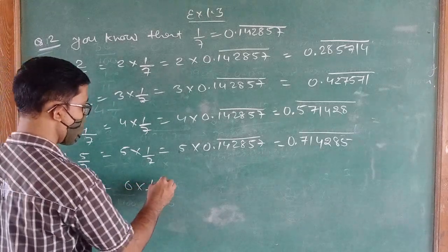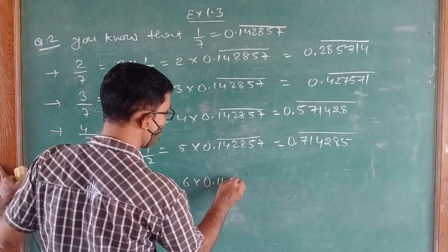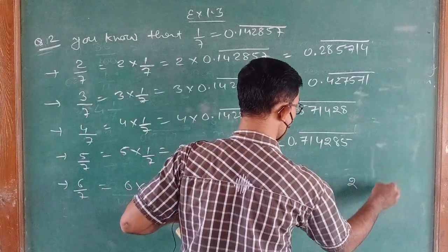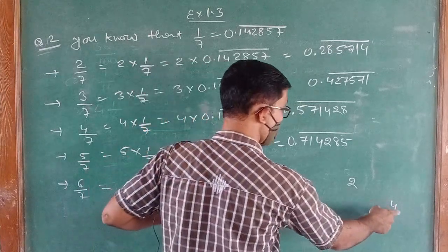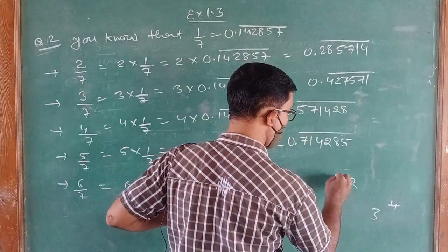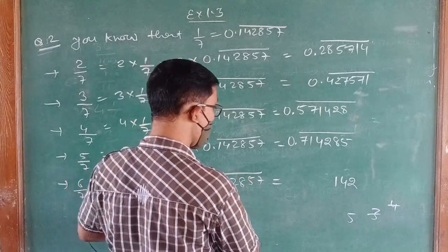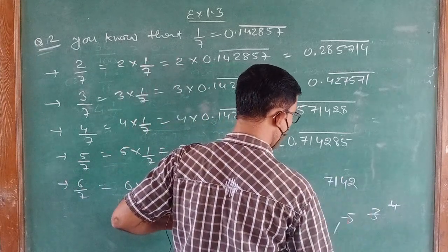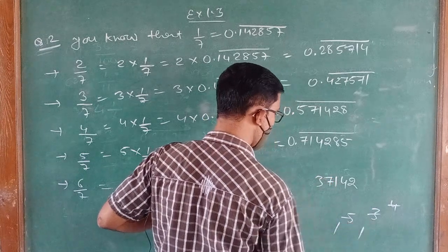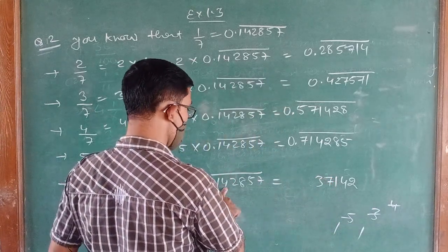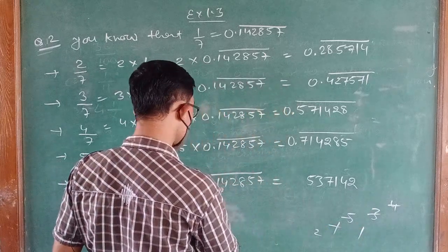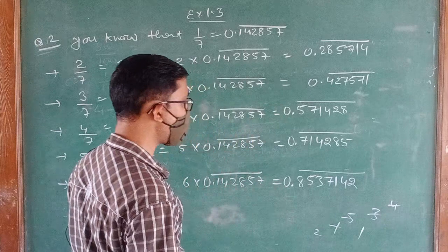For 5 upon 7: 5 × 0.142857. Five sevens are 35 carry 3, five fives are 25 and 3 = 28 carry 2, five eights are 40 and 2 = 42 carry 4, five twos are 10 and 4 = 14 carry 1, five fours are 20 and 1 = 21 carry 2, five ones are 5 and 2 = 7 — so 5 upon 7 = 0.714285.